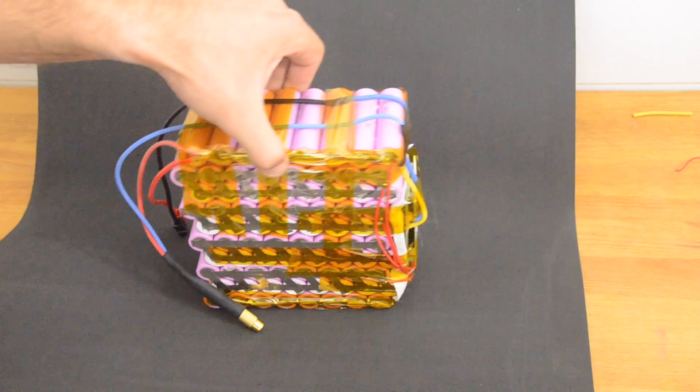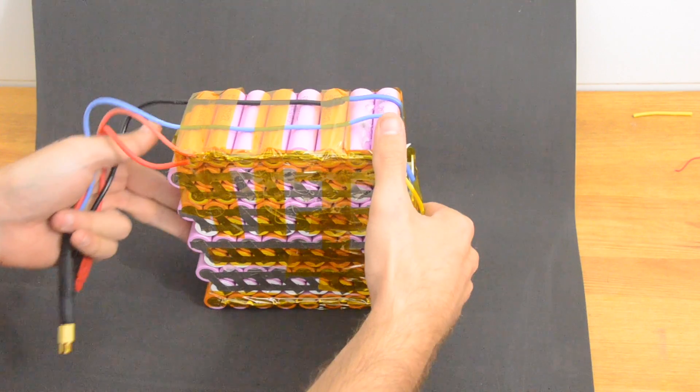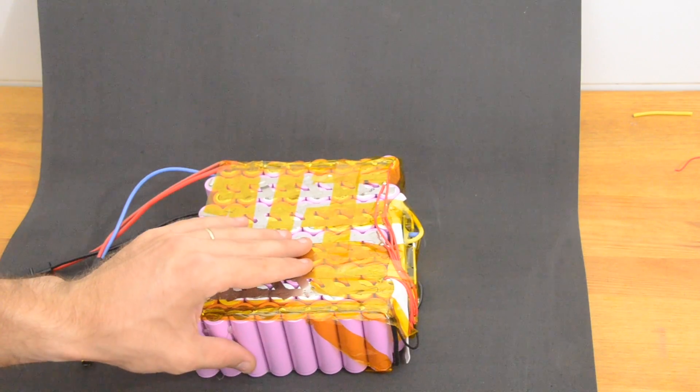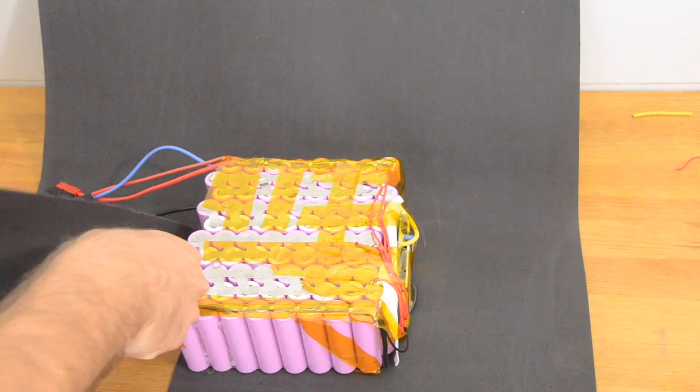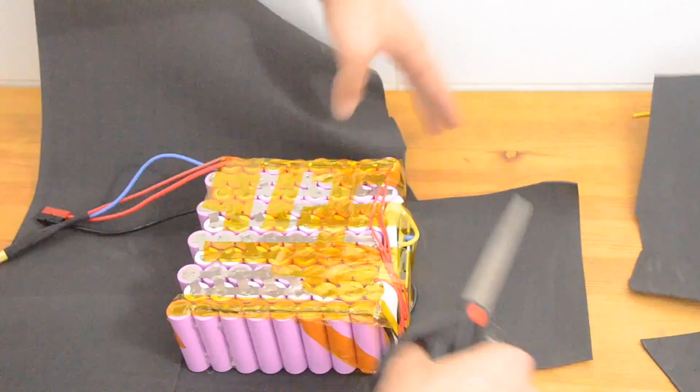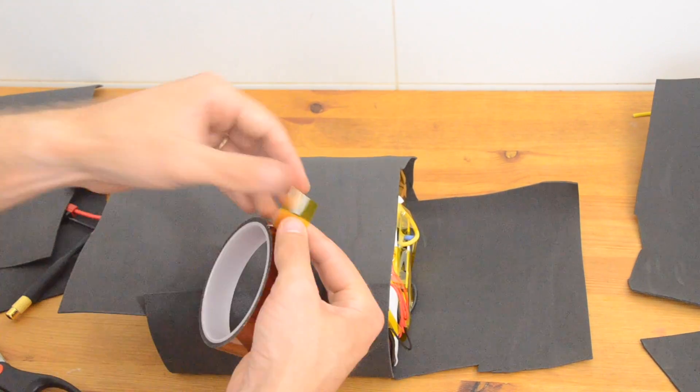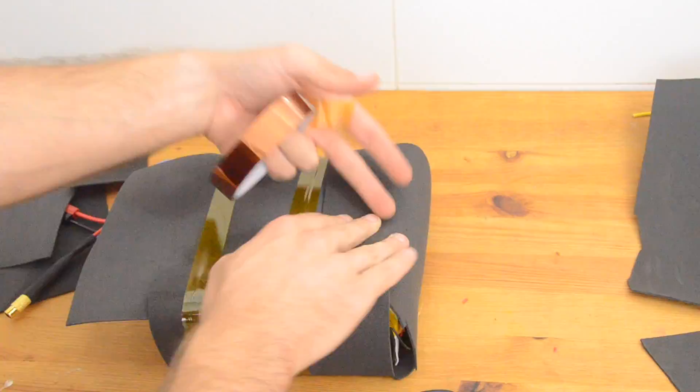Now I'm going to go ahead and cut out the foam for wrapping my battery. This is just some three millimeter EVA foam. You can get it from like an arts and crafts store. I get mine online from AliExpress, but it's all the same. And basically, I'm just cutting out an approximate shape of the battery. You don't really have to be that close. The idea is just that you've basically got foam wrapped around this thing.